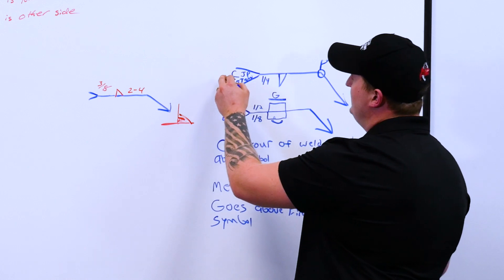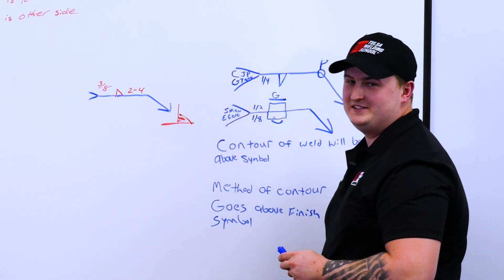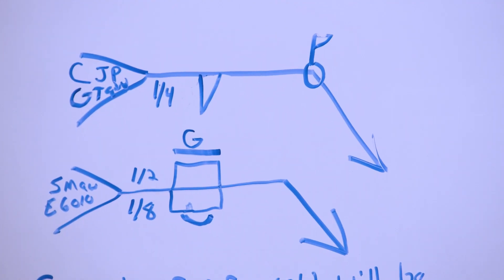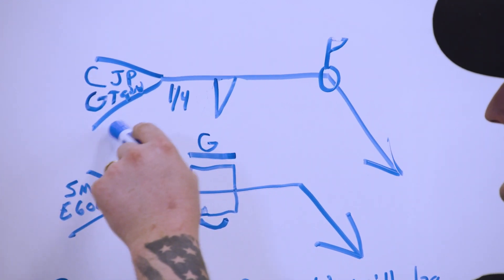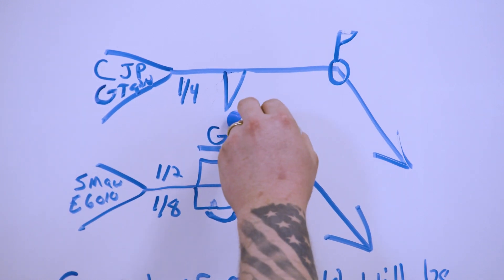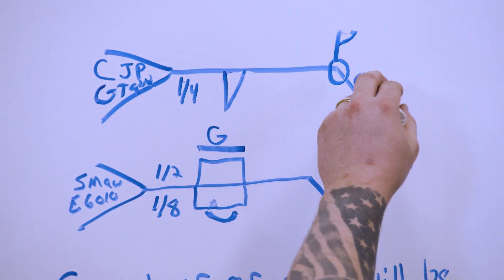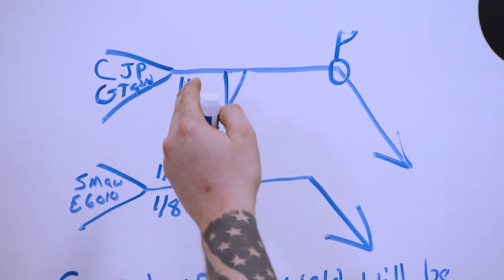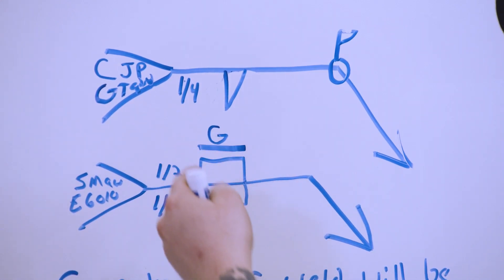We have in the tail, CJP. What do you think that stands for? It stands for Complete Joint Penetration. Then we have GTAW, better known as TIG, Gas Tungsten Arc Welding. So we're going to make a quarter inch fillet weld on the arrow side, weld it all the way around, in the field, it's going to be Complete Joint Penetration, and it's going to be done with TIG.